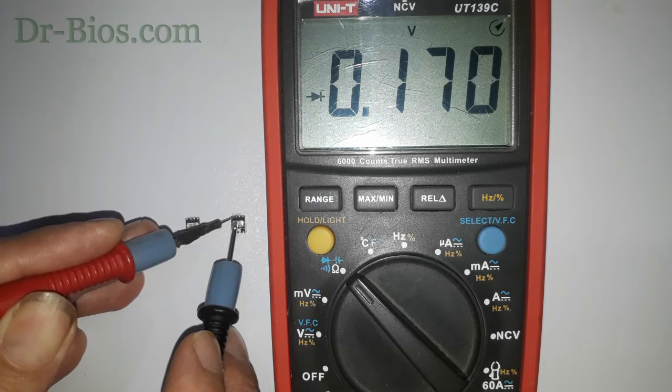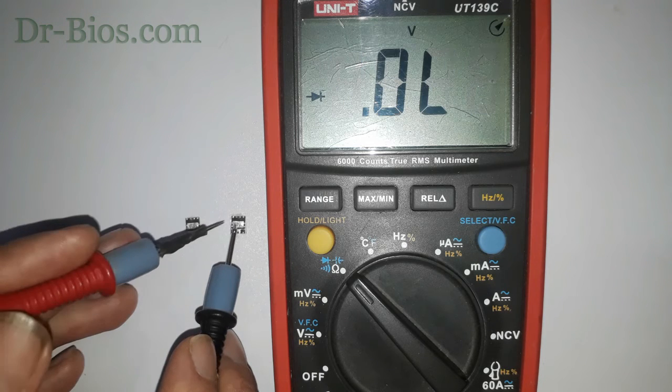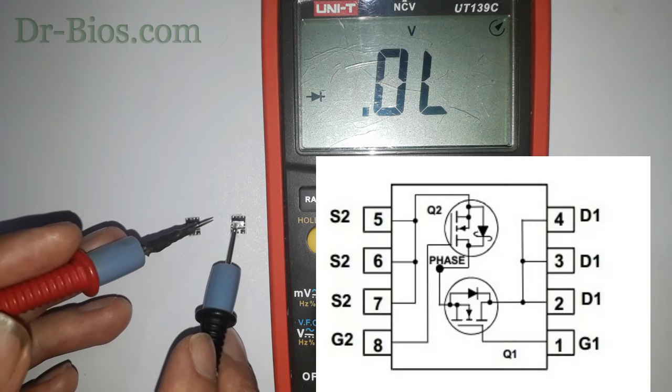Yes, 0.148 V. And that means internal diode of low MOSFET is Schottky diode.